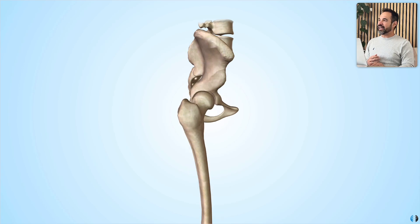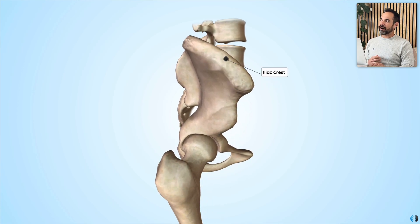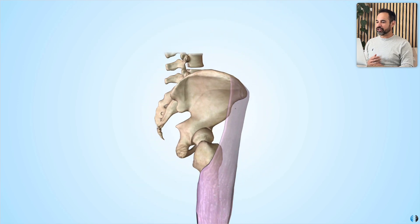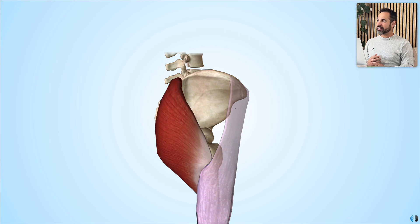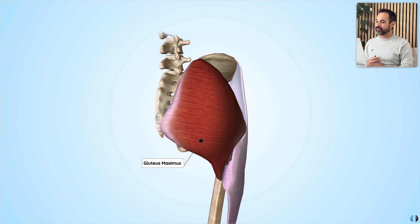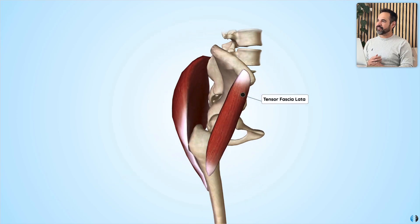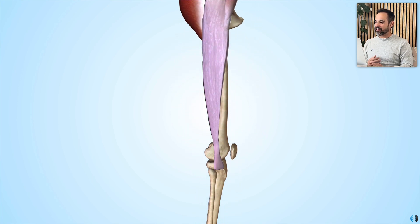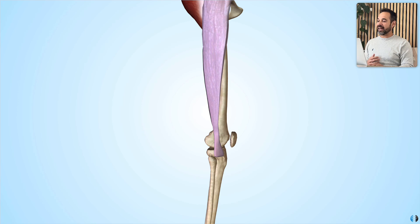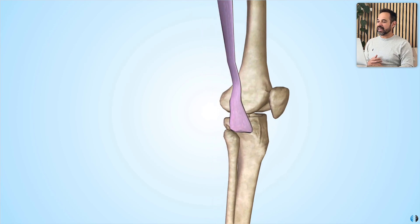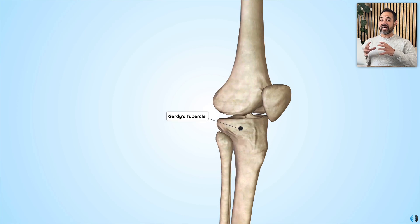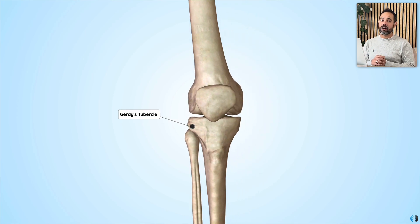It originates at the iliac crest of the ilium, and it is said to be a continuation of the gluteus maximus muscle and the tensor fasciae latae muscle. It then runs down the lateral leg before it inserts at the knee — more specifically into a point called Gerdy's tubercle at the anterolateral aspect of the tibia.